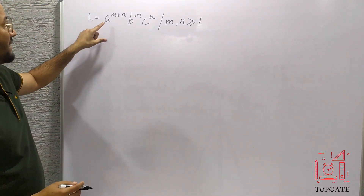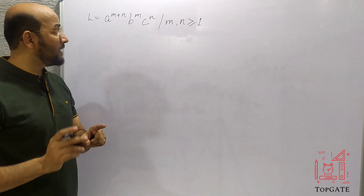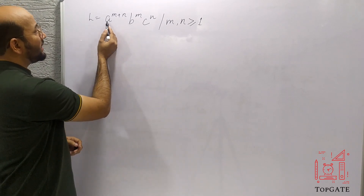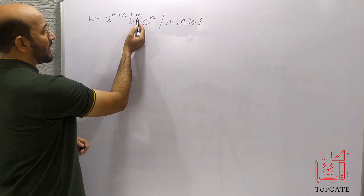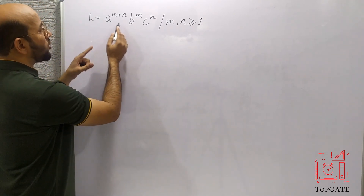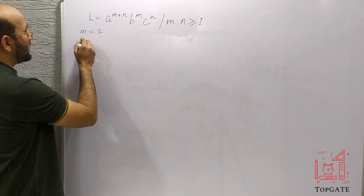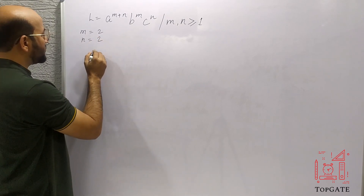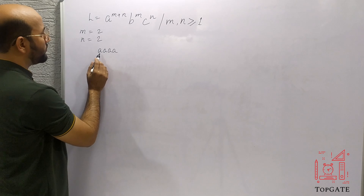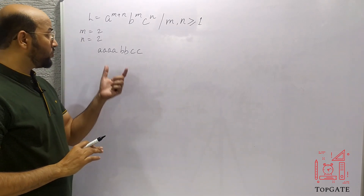The language starts with a's, then b's, then c's, and m and n must be at least one — they cannot be zero. The count of a's is the combination of b and c: if m=2 and n=2, then a appears m+n = four times, followed by two b's and two c's. We have to design a PDA that accepts this kind of language.